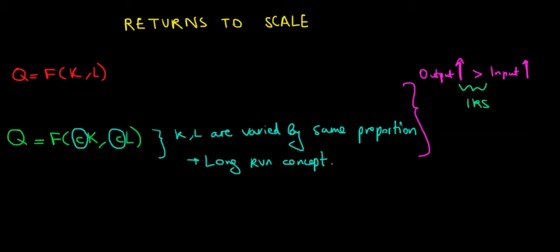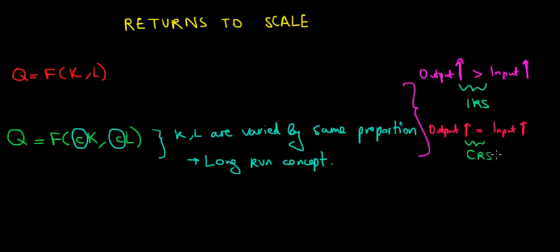The second case is when they are equal — the increase in output is going to be the same as the increase in input. Because the change is the same, we're speaking about the scenario of constant returns to scale. Whatever proportion we scale capital and labor by, the output will increase by that same proportion — there is a constant ratio between the two.